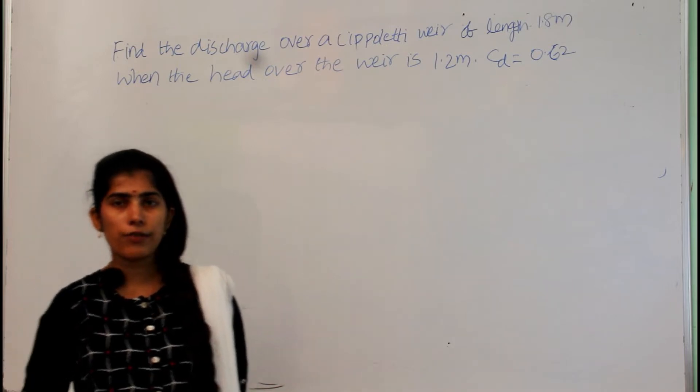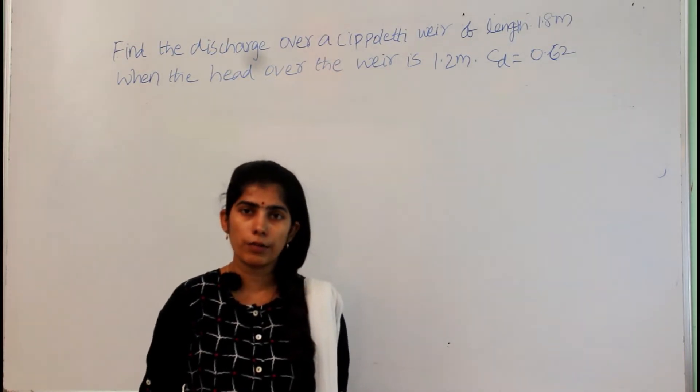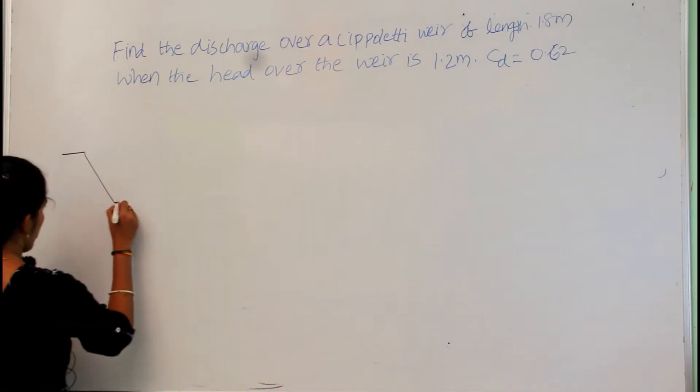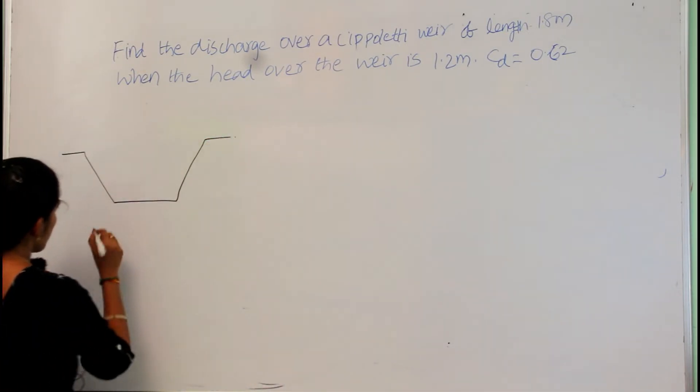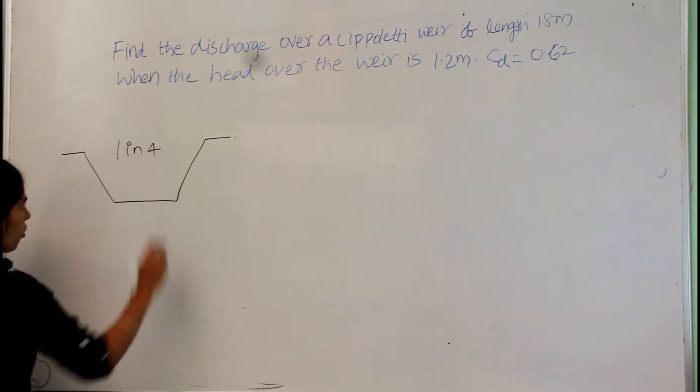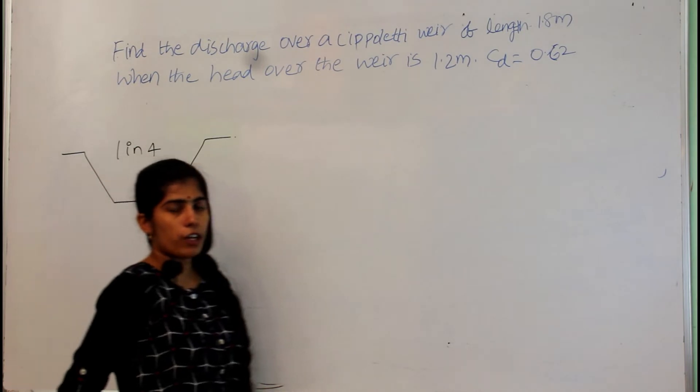In the starting videos itself I said that Cipolletti weir is nothing but a trapezoidal weir. That means it is in the shape like this. So, Cipolletti weir having the slope of 1 in 4, that means 1 horizontal with 4 vertical.